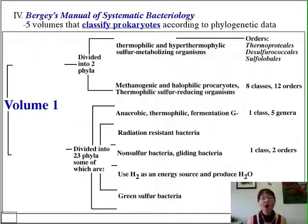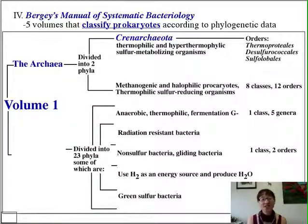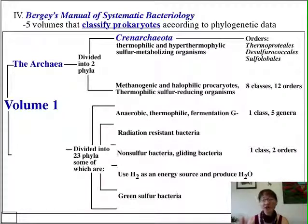The deeply branching archaea and deeply branching bacteria comprise volume one. The archaea at this point comprise only two phyla within this single volume, which gives you a sense of the immense diversity of the bacterial world and the tiny proportion of Bergey's Manual devoted to archaea. The first phylum is the Crenarchaeota, which includes thermophilic and hyperthermophilic sulfur-metabolizing organisms, though its membership appears more extensive than once thought, with some members actually inhibited by sulfur.